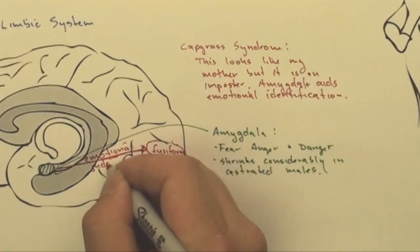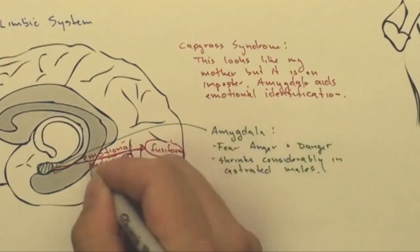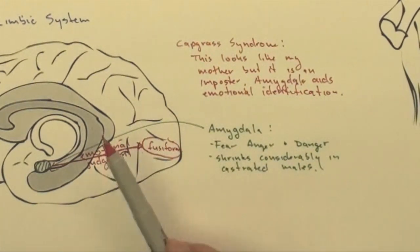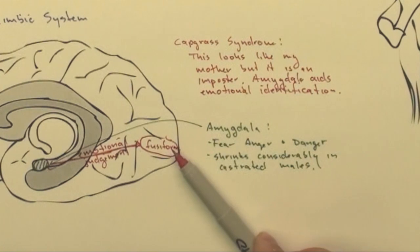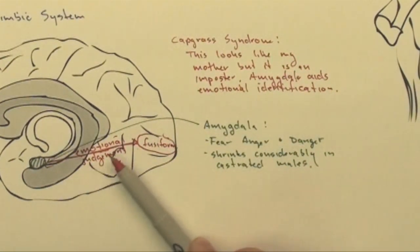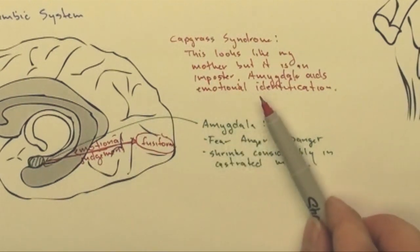And what that does is that somehow communicates with the amygdala and makes an emotional judgment. So when you look at a picture of your mom, you're going to have some kind of emotional judgment. Some kind of warm feeling or something like that. And this patient, this is cut. So the fusiform gyrus says it's his mom, but he doesn't get that emotional judgment. And so he says she's an imposter.